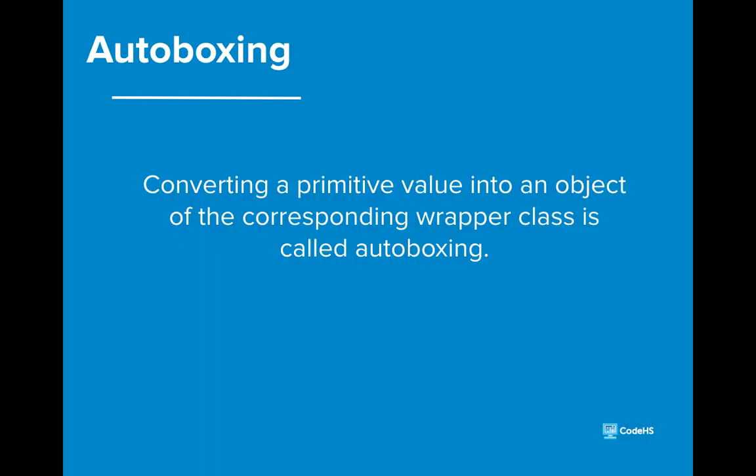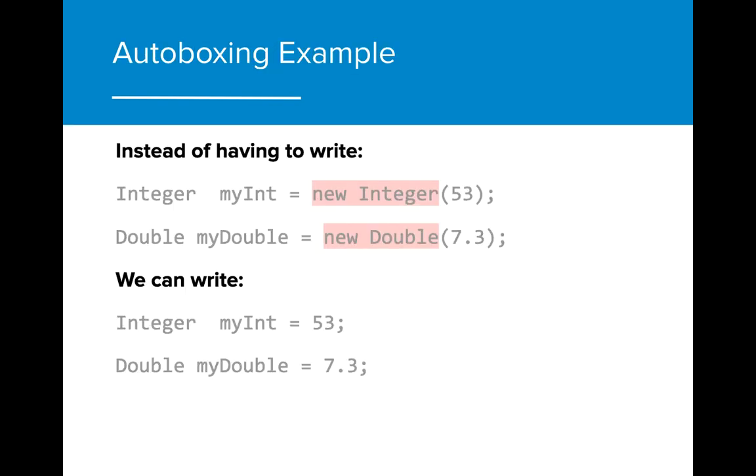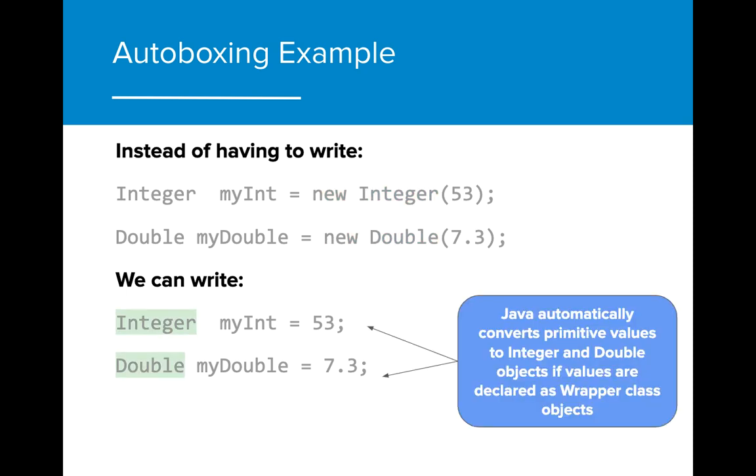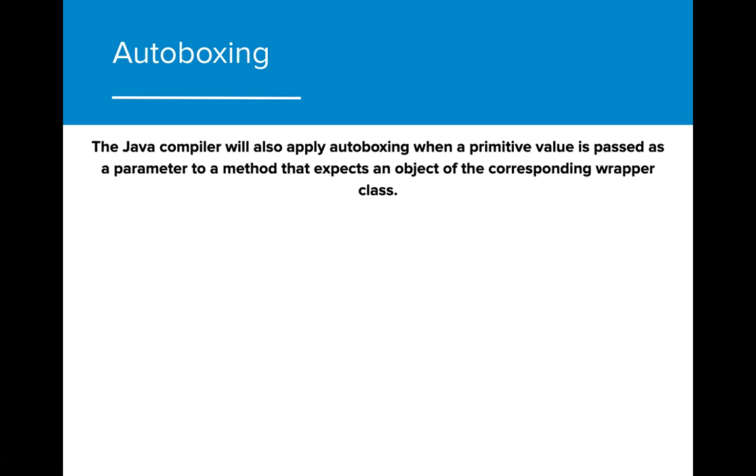Autoboxing includes converting a primitive int to an object Integer and a primitive double to an object Double. Autoboxing is done automatically by the Java compiler. Instead of having to write the full constructor, Java will convert the primitive value to the wrapper class if the data type declared at the beginning of the variable corresponds to the correct wrapper class. The Java compiler will also apply autoboxing when a primitive value is passed as a parameter to a method that expects an object of the corresponding wrapper class.